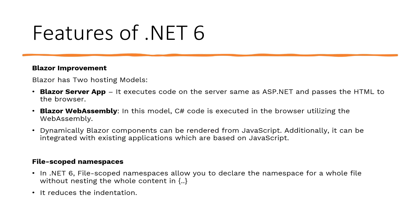The next feature is file-scoped namespaces. In .NET 6, file-scoped namespaces allow you to declare the namespace for a whole file without nesting the entire content in curly braces. It reduces indentation, making it easier for the developer.